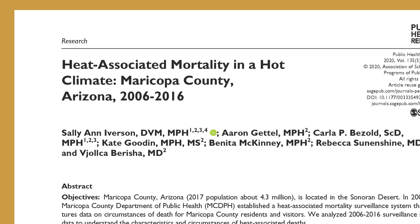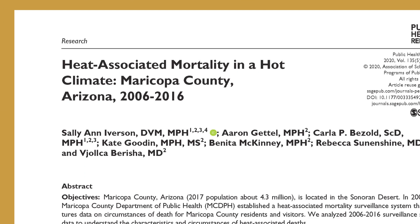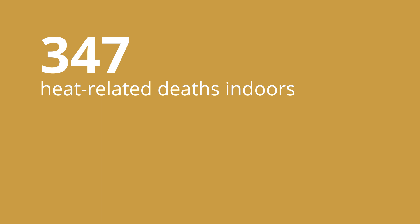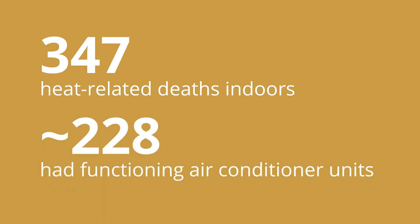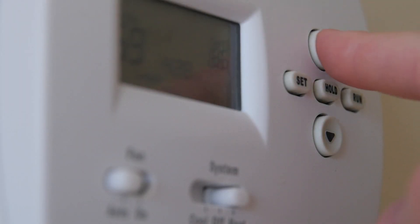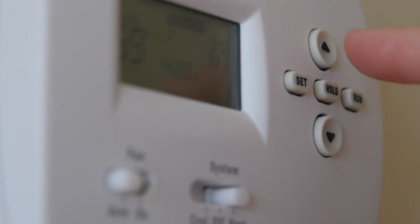One of the things that we have been looking at is who is unable to use their air conditioning system, particularly as we are moving throughout the summer season. A recent study by Iverson et al. published in 2020 showed that 347 heat-related deaths occurred indoors despite all of those households having an air conditioning unit. In roughly 228 of those households, the air conditioners were all deemed to be working, but for some reason these households felt like they either couldn't use it or couldn't afford to use it.